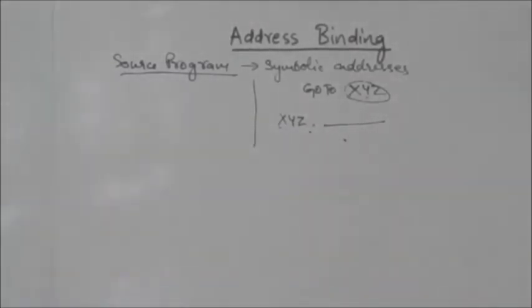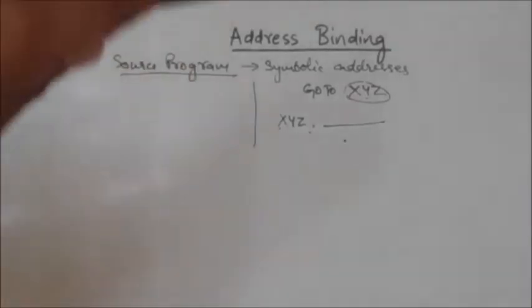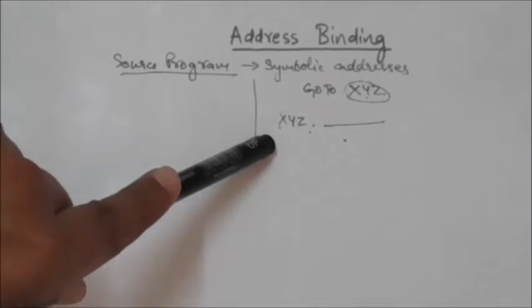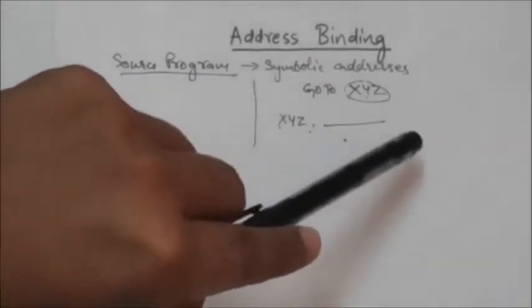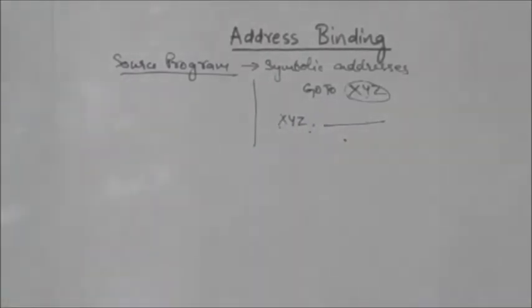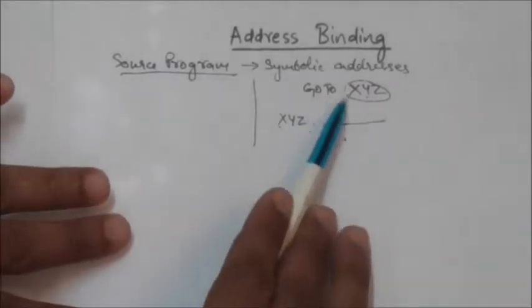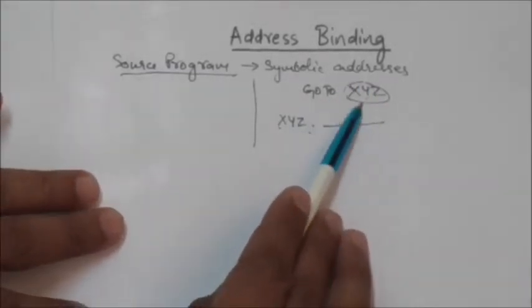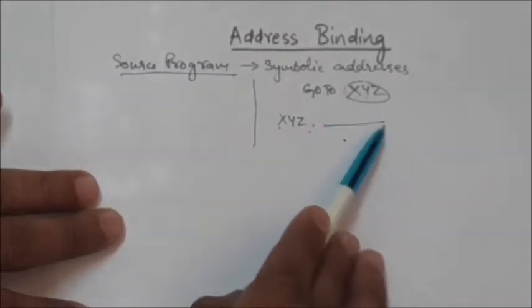When this program is to be executed, whatever physical address corresponds to this symbolic address must be available at execution time. So during the execution of a program, whatever symbolic addresses are used in the source program, their corresponding physical addresses must be available at the time of execution.